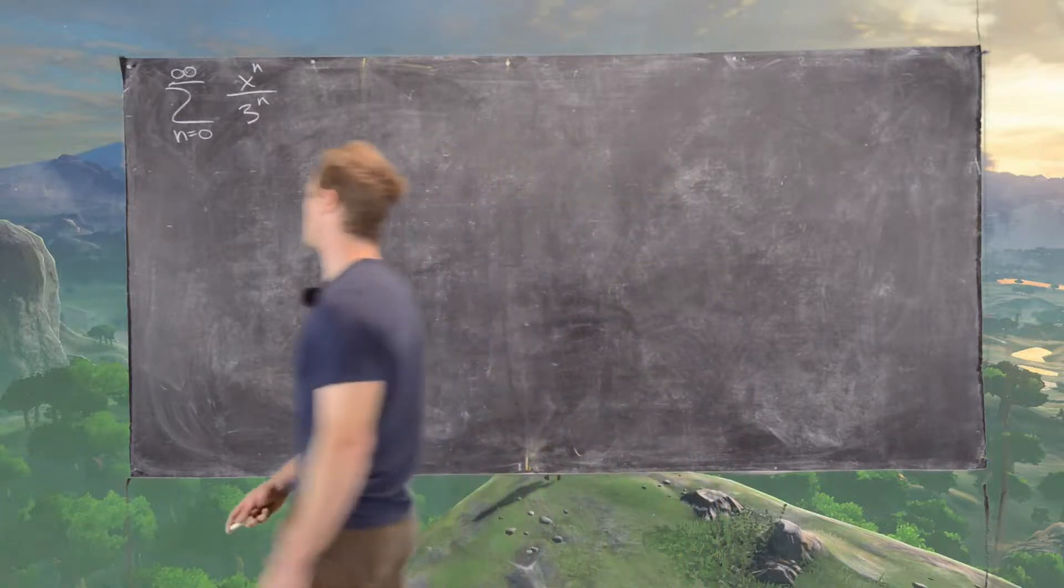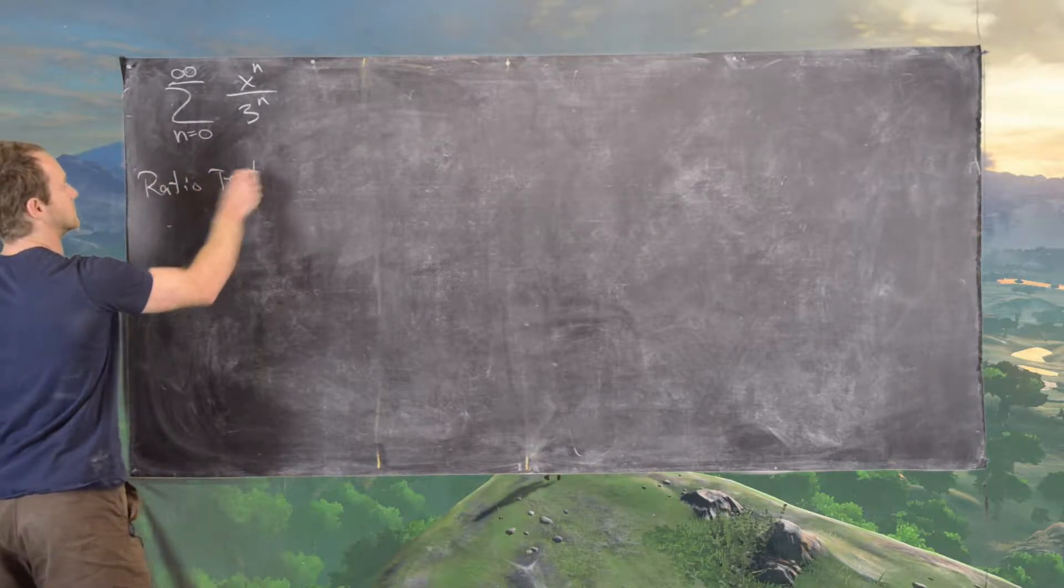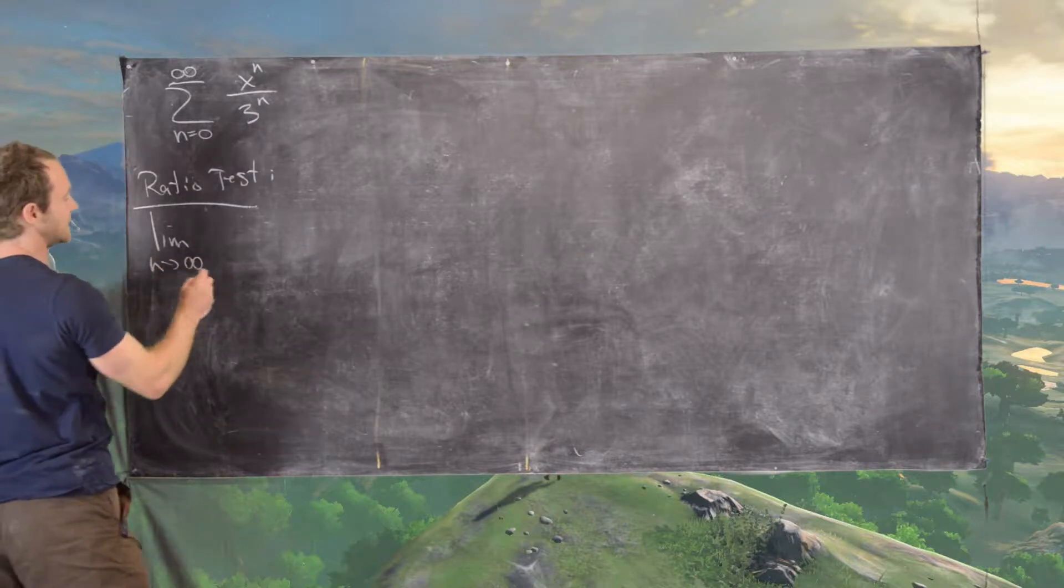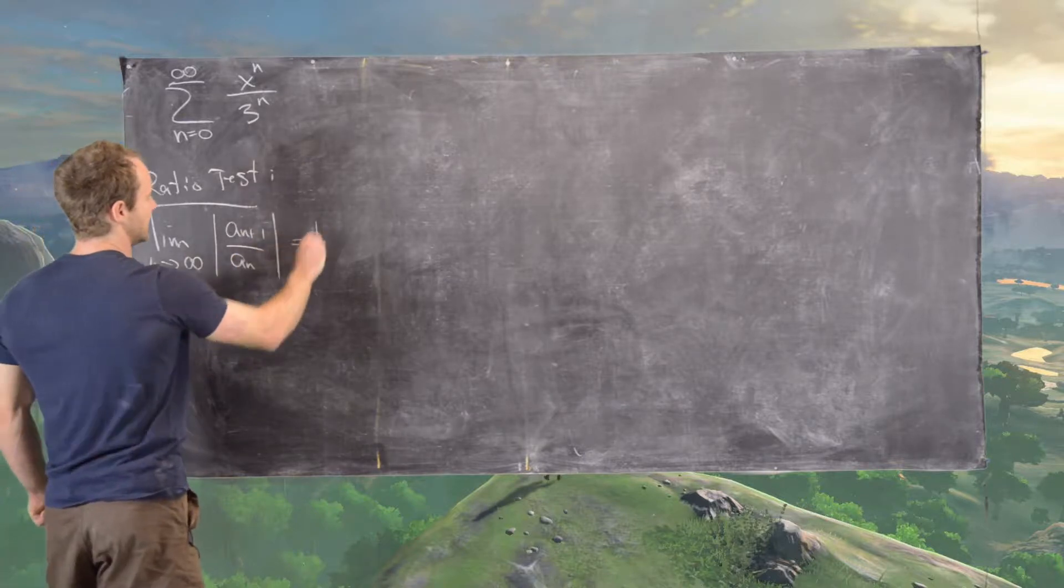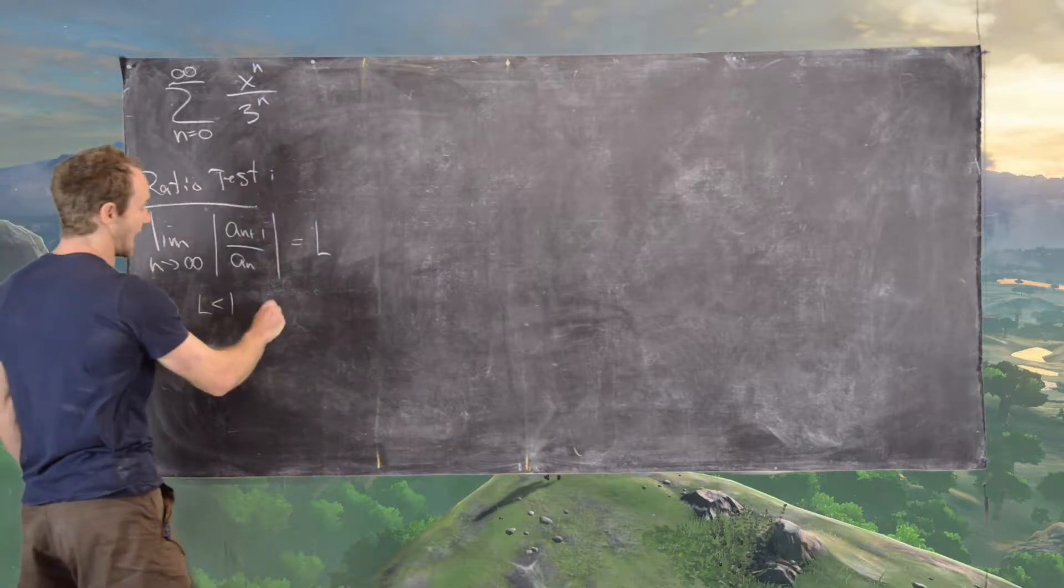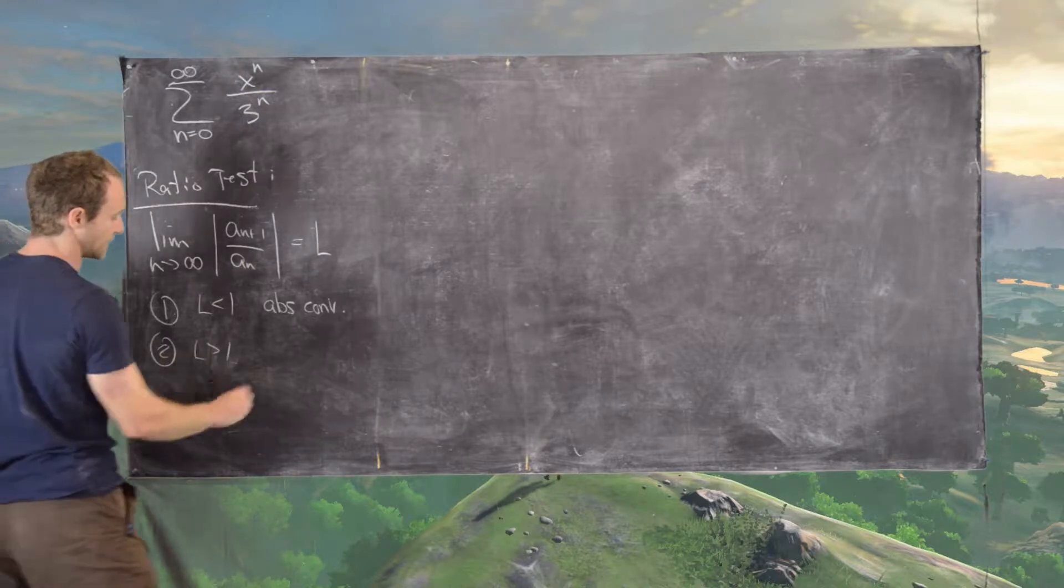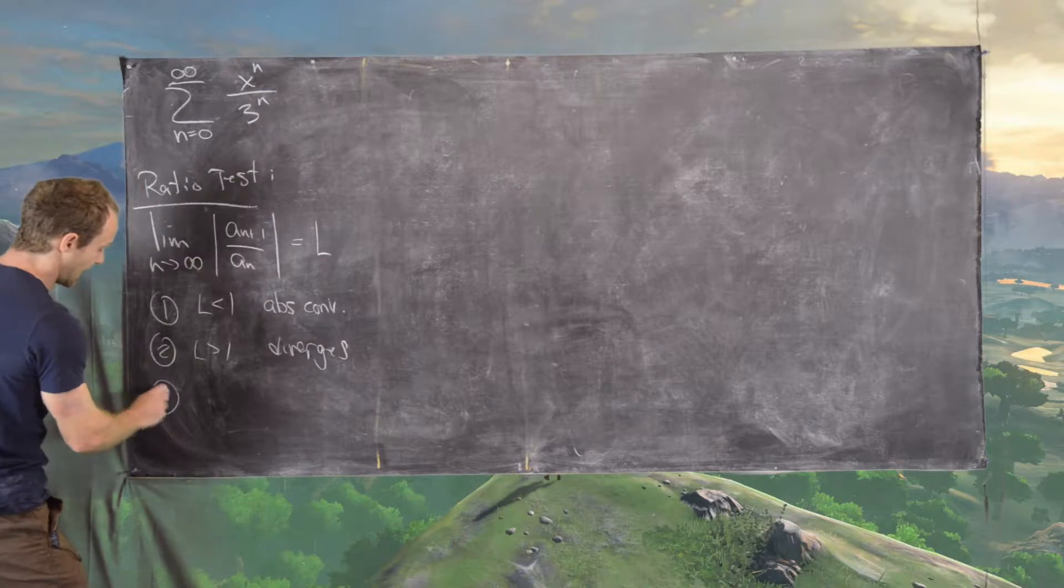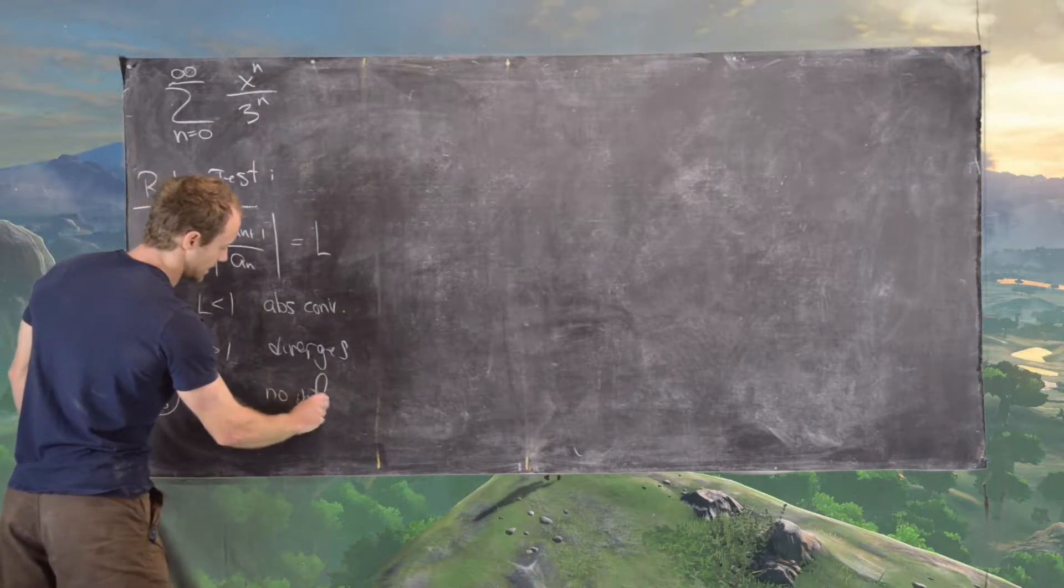So the first thing that we want to do is look at the ratio test. And so the ratio test says the limit as n goes to infinity of a to the n plus 1 over a to the n, if that equals l, so if l is less than 1, then it absolutely converges. If l is bigger than 1, then it diverges. And then finally, if l equals 1, then there is no information.